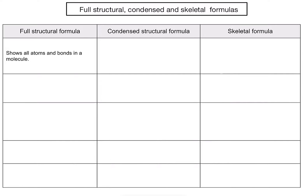For a condensed structural formula, which simplifies things a little bit, there are two points to bear in mind. First, we write it in one line like a normal chemical formula, but we order it to show what is bonded to each carbon atom in the main chain.